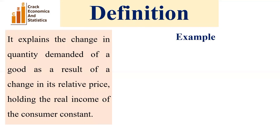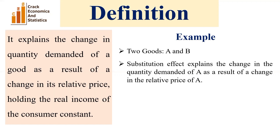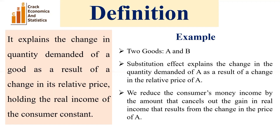So here the real income of the consumer does not change. Let's take an example: suppose we have two goods A and B. The substitution effect explains the change in the quantity demanded of A as a result of a change in the relative price of A. In this case, we reduce the consumer's money income by the amount that cancels out the gain in real income that results from the change in the price of A.